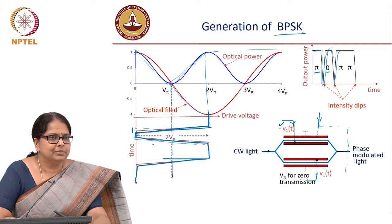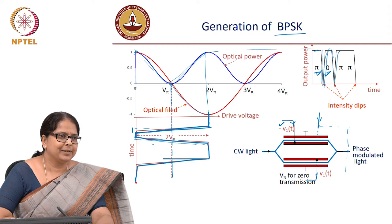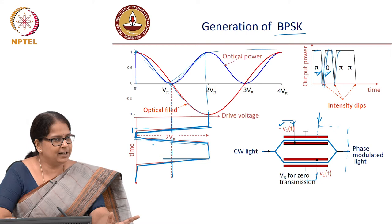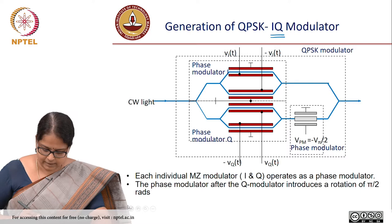How do you generate QPSK? You need four phases. A single modulator will generate two phases. To make two phases into four phases, you will need two BPSK modulators. That brings us to the QPSK modulator, or what is called an IQ modulator.